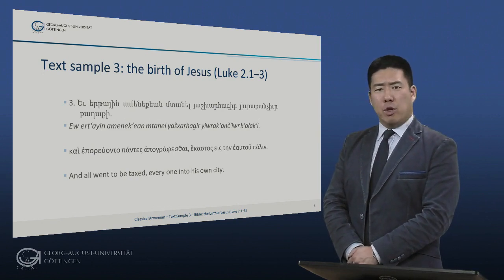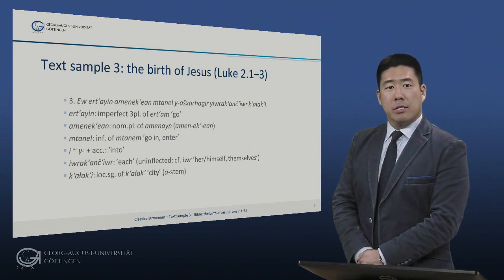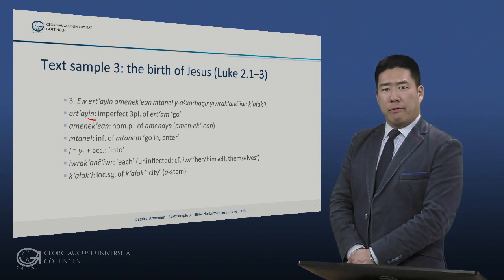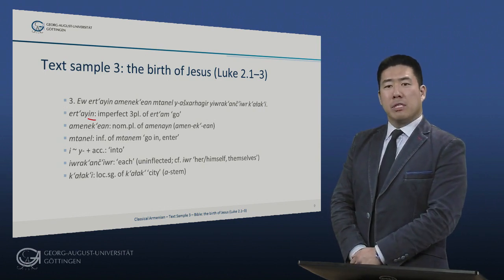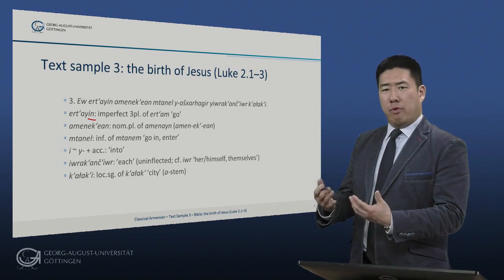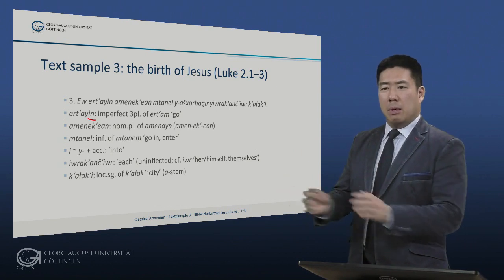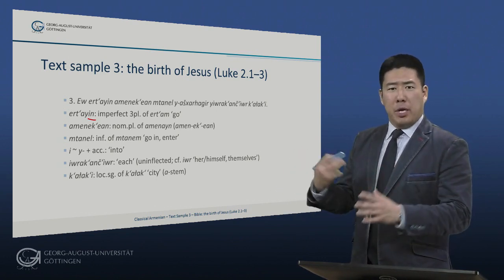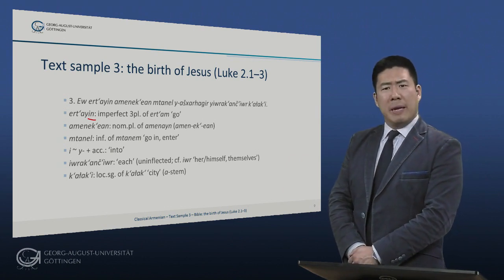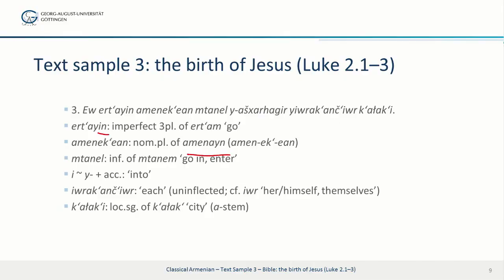The King James reads: 'And all went to be taxed, everyone into his own city.' E is an imperfect third plural ending, of er tam, meaning 'go.' Er tam is an irregular verb; the er is the suppletive stem, but the formation of the imperfect is completely regular. Why do we have an imperfect here? People were going for a while — this is a narrative being related, and they didn't all go at once. You have a big mass of people going over some period of time, hence the imperfect is appropriate, as it is in the Greek original. Amenekion is the nominative plural of amenain, 'all.' If you're wondering why the k is in the middle of the form, amenain was originally amen plus ein — it was a compound — so unusually, the k marking the nominative plural is in the middle.